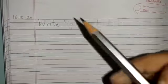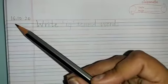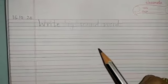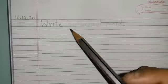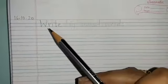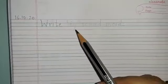So, first of all, please write down today's date on the top, which is 16th October 2020. Now, today we are going to learn a few IG sound words. So on the top you are going to write down: Write IG sound words.